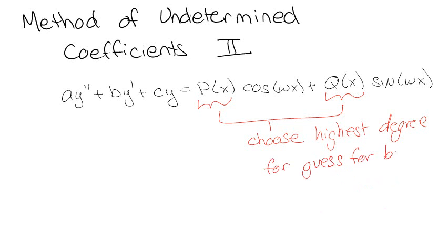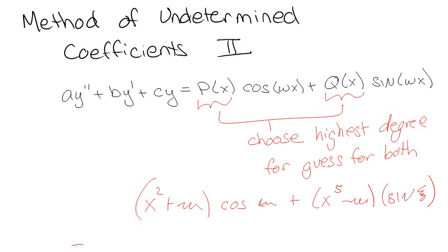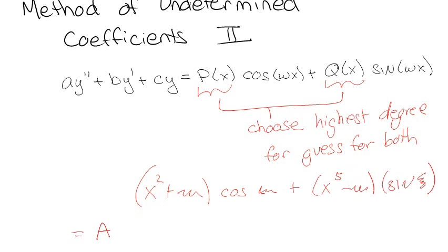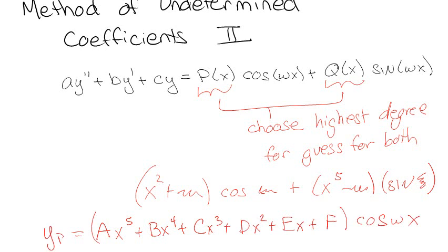So the idea would be that if I had something like x squared plus blah blah times cosine something, and then I had x to the fifth blah blah times sine something, then whenever you did your guess it would be ax to the fifth plus bx to the fourth plus cx cubed plus dx squared plus ex plus f times cosine omega x.